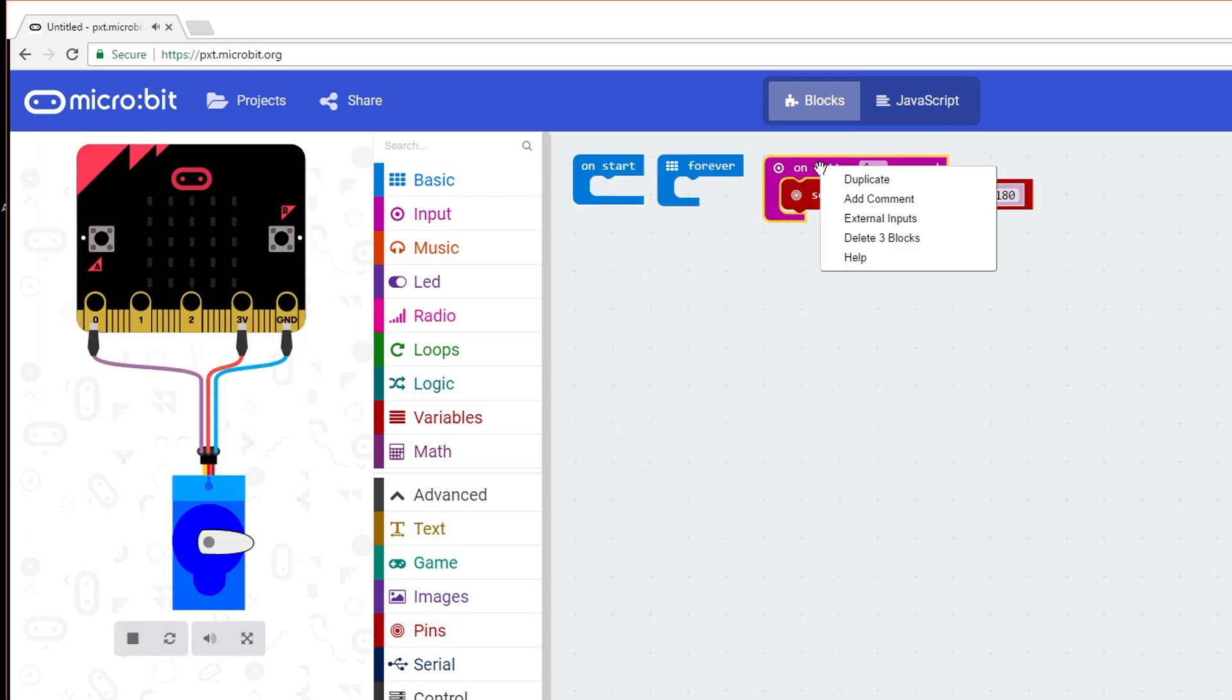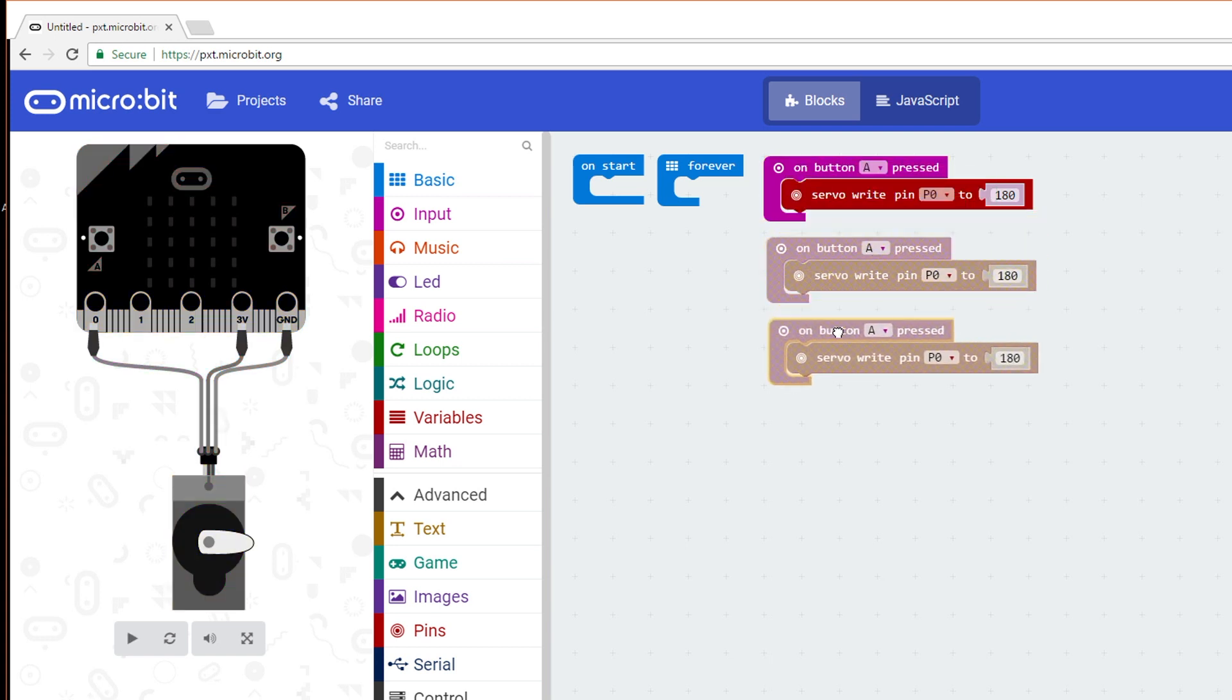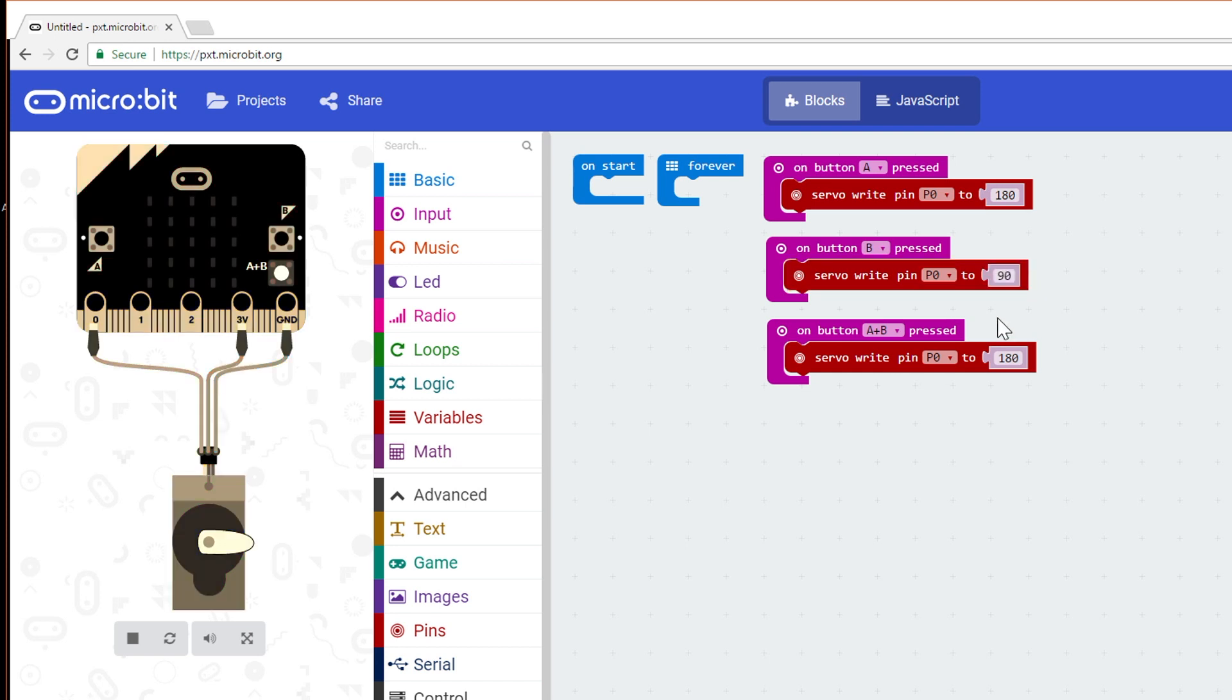Right click on the OnButtonPressed block and click Duplicate. Do this one more time so we have a total of three button pressed blocks. Move them around so you can see all three. Change one of them to look for button B and the other to A plus B. Under B, change the servo position to 90, which will have the servo point straight ahead. Under A plus B, change the servo position to 180, which will have the servo point to the opposite direction of its starting position.